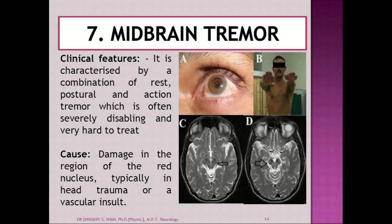The seventh type is midbrain tremor, a very serious type. It is characterized by a combination of rest, postural, and action tremor, which is often severely disabling and very hard to treat. It is associated with the region of the red nucleus and is typically seen in head trauma or vascular insult. The prognosis of this type of tremor is very poor and very difficult to treat.